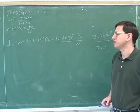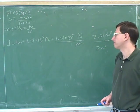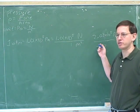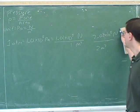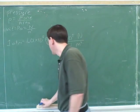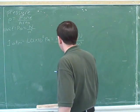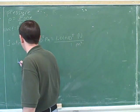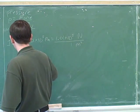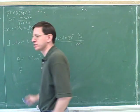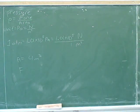The pressure tells you what the force would be over one square meter, and it's easy to use that to figure out the force over two or three square meters. Let's do that — let's say I've got four square meters of area and figure out what the force of the atmosphere would be on that.